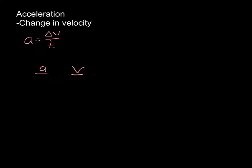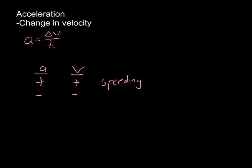For example, if we have a positive acceleration and a positive velocity, that would mean that our object is speeding up — the acceleration is occurring in the positive direction and we're traveling in the positive direction, so we're getting faster. We could also have acceleration and velocity both being negative. Again, that would mean speeding up. As long as acceleration and velocity are both the same sign, that means we're speeding up.